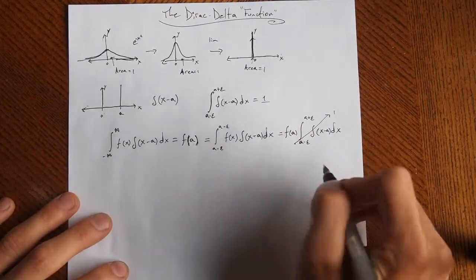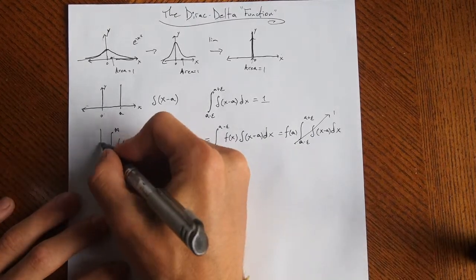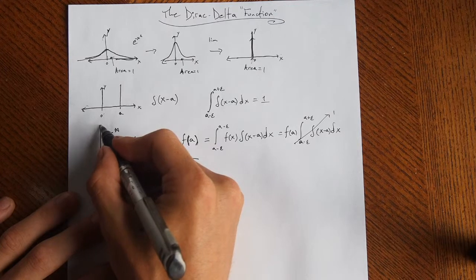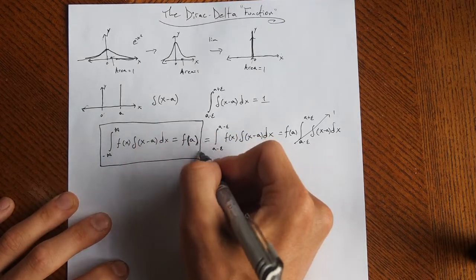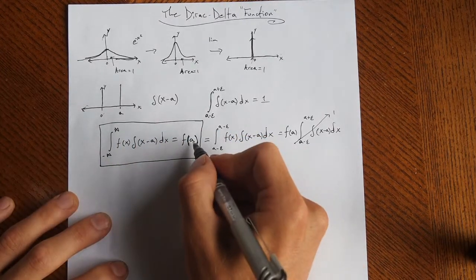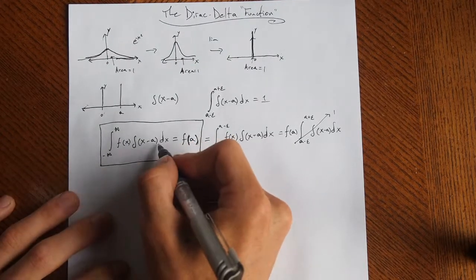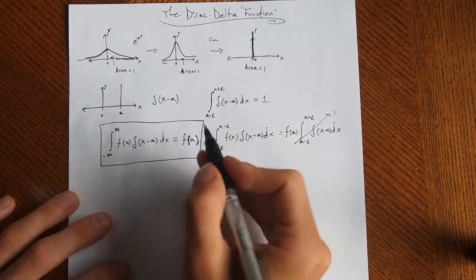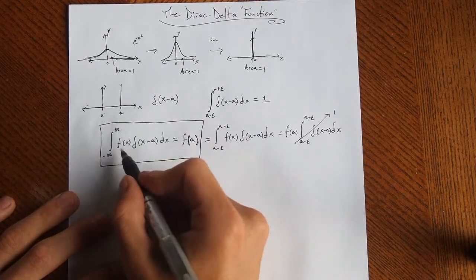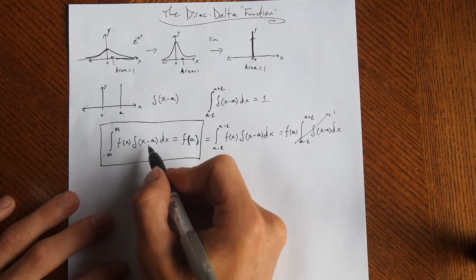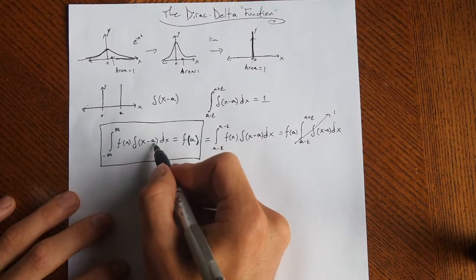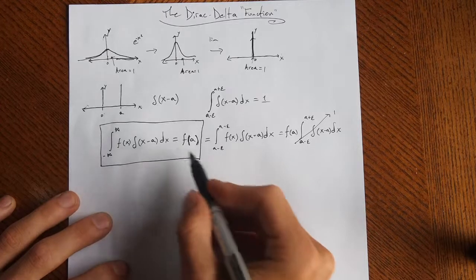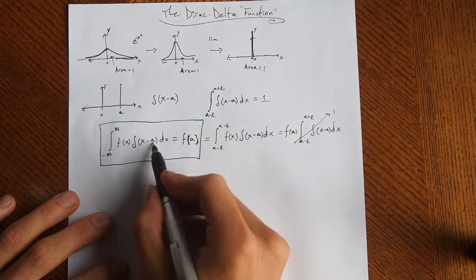And like I said, if you want to be fancy, you can take the limits. So what the delta does is it serves to pick out the value of the function at the location of the delta inside of an integral. So once again to restate that, if you're integrating a function times a Dirac delta at some point, it serves to pick out the value of this function at the point of the delta.